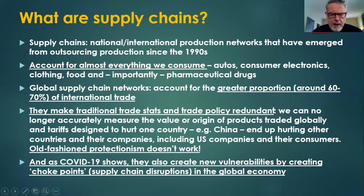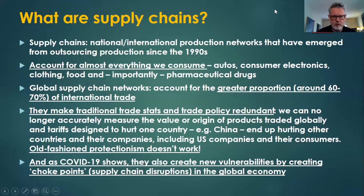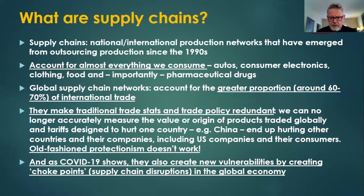So first of all, this is about supply chains, but what are supply chains? Supply chains are the national and international production networks that have resulted from outsourcing production in the world economy since the 1990s. They account for almost everything we consume today — autos, consumer electronics, clothing, food, and importantly, pharmaceutical drugs. They account for around 60 to 70 percent of international trade — that's intermediate goods flowing within company networks.